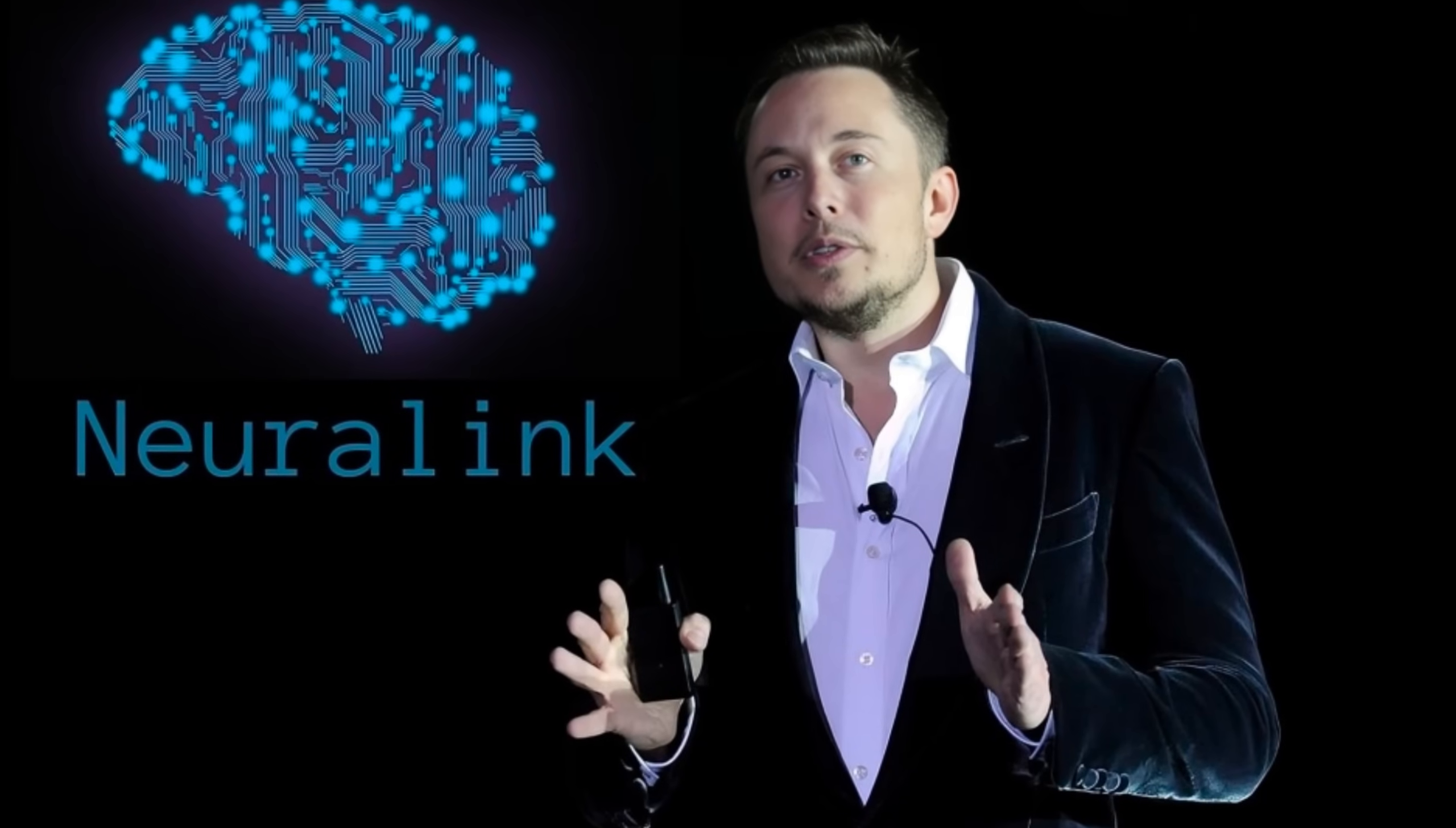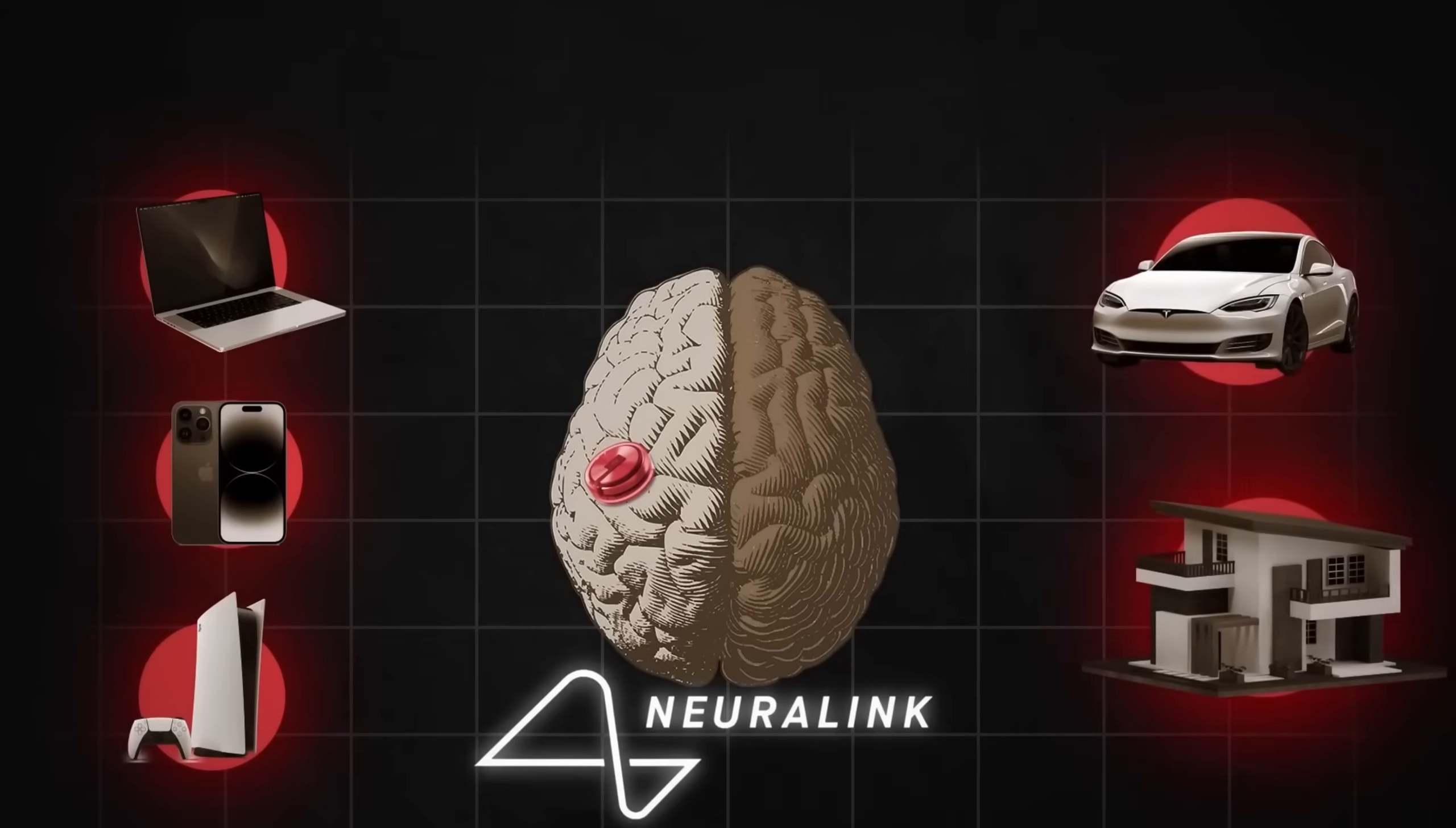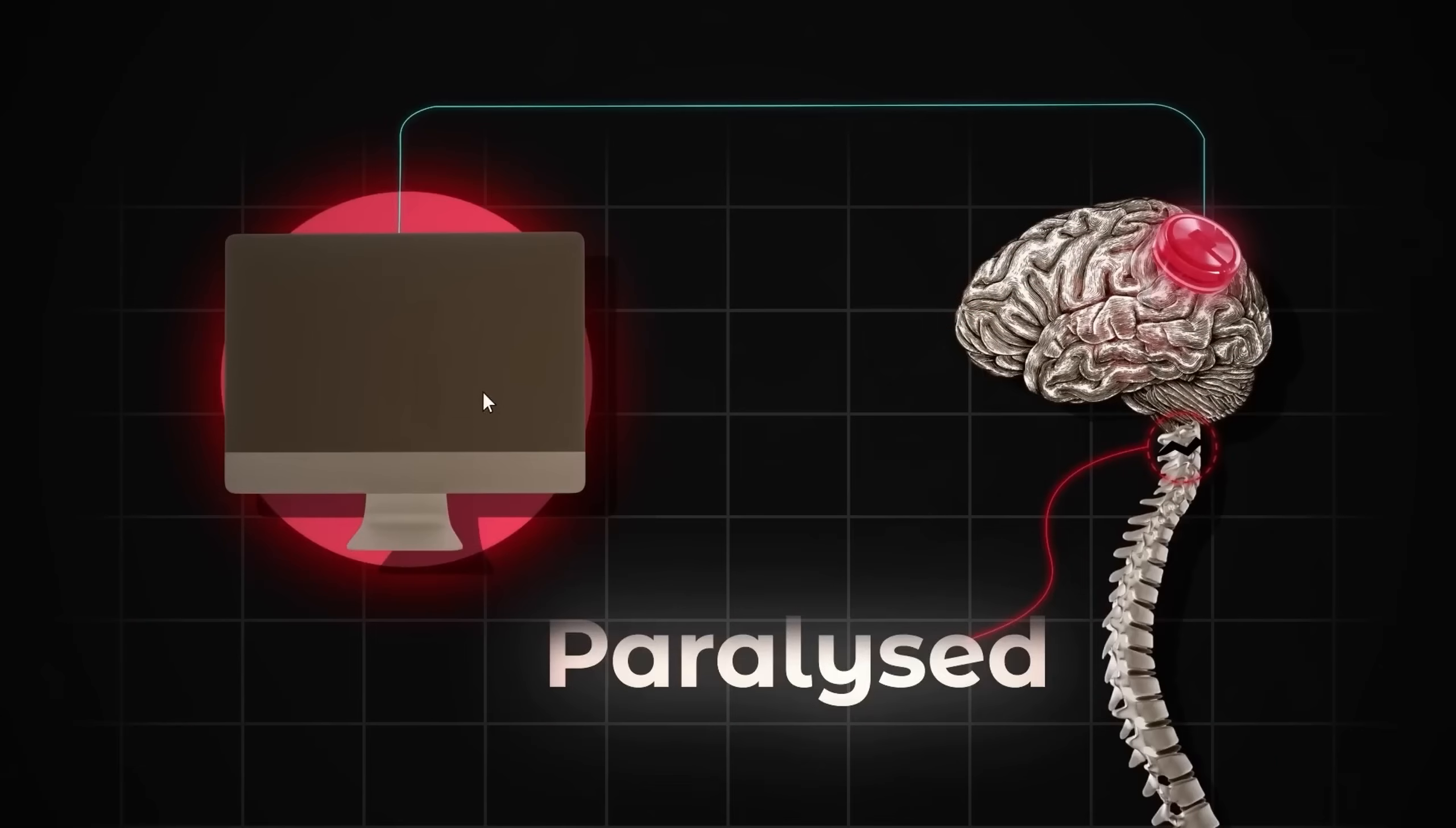Elon Musk has big plans for Neuralink. He believes they will keep improving the chip, adding more electrodes, and making it better at processing signals. These electrodes pick up signals from brain cells and send them to the implant's electronic devices, which then send the data wirelessly to an app on a computer or another device. This is how patients can control things just by thinking.